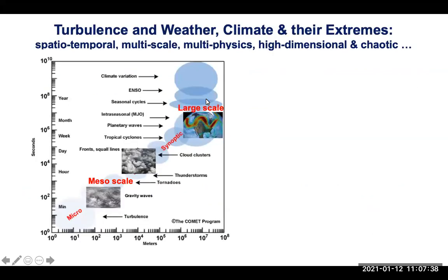The motivation for this talk is weather and climate modeling, and certain aspects that are very difficult — for example, modeling climate and weather extremes such as high temperature events, storms, or hurricanes. Our climate system is a continuous spatial-temporal system, and it's very chaotic. It has interaction of large scales, small scales, and mesoscales that are continuous in both space and time.